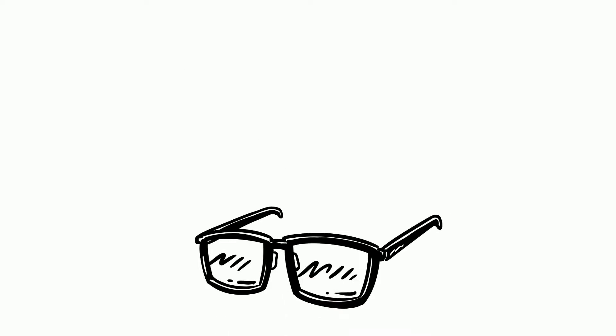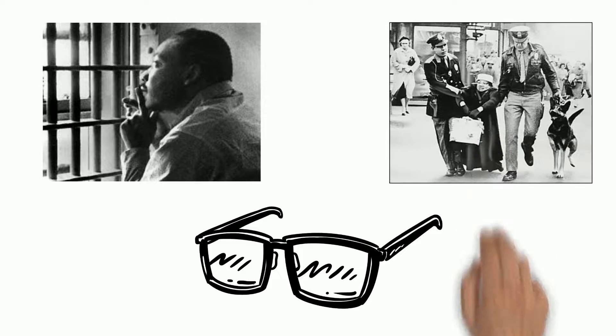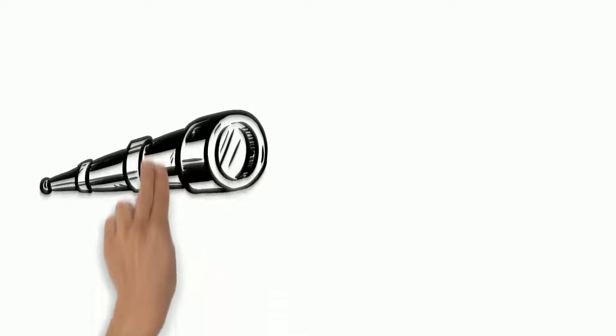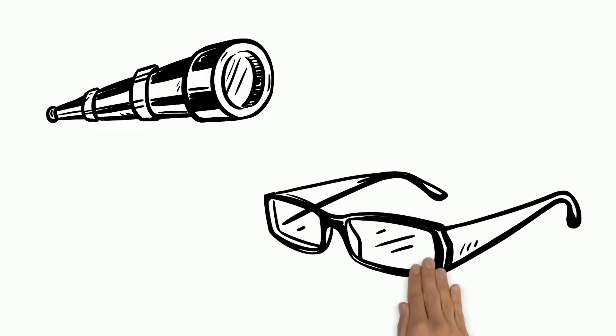The point of view is the perspective or bias of the author. What lens are they looking through when they create? Which side of the story are they telling? Everyone has a different perspective or view of an event.